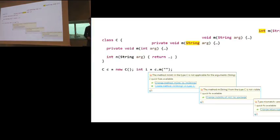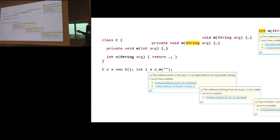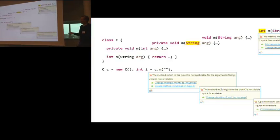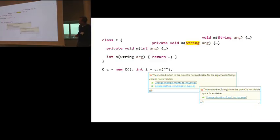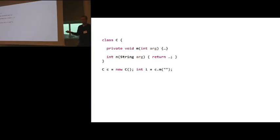Now I'm done — no, not quite. This time I have an error: a return statement is missing. At this point I realize M, which doesn't return anything, is not the right method. So I went through all these fixes only to realize I was wrong. I undo all these changes, and at this point I have no alternatives. I think about it myself and realize I just need to change M to N. Now I'm done. But this fix was not offered by the IDE.